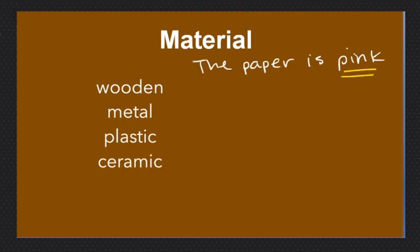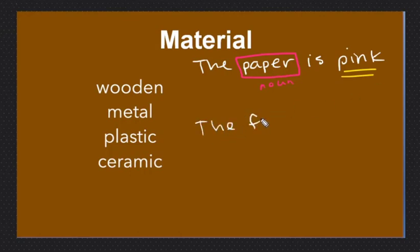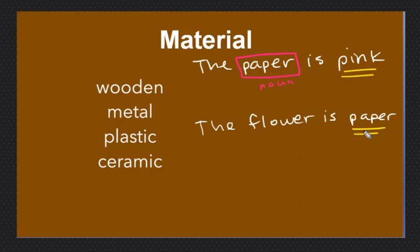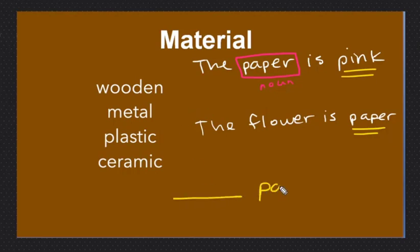The paper is pink. Now our adjective is pink, but here paper is a noun — it's a thing. So I can also say this is a paper flower, or I can use the same kind of sentence: the flower is paper. Now paper is an adjective.